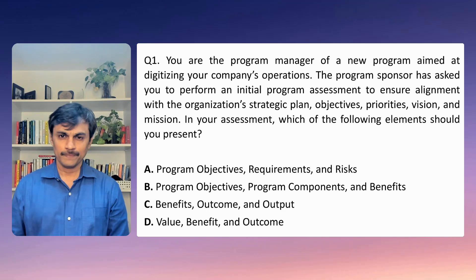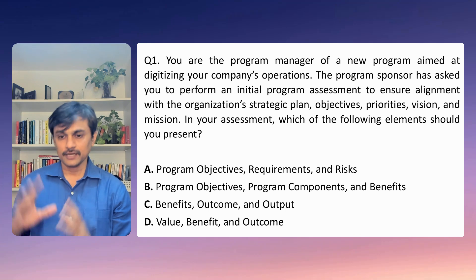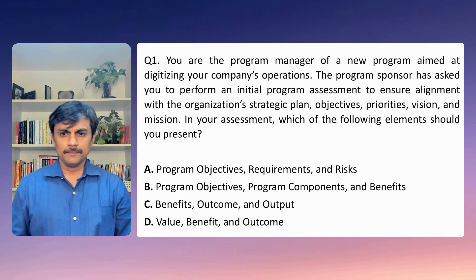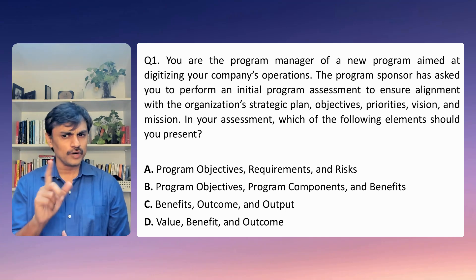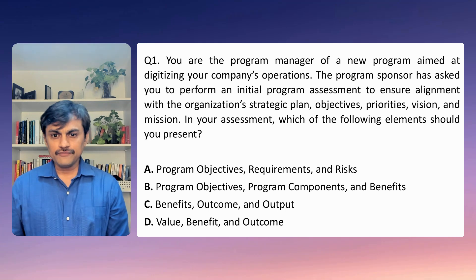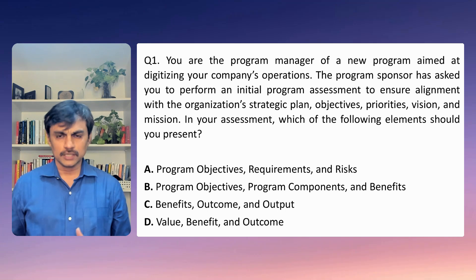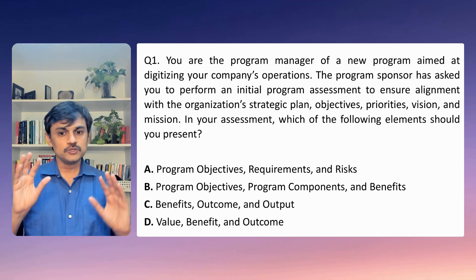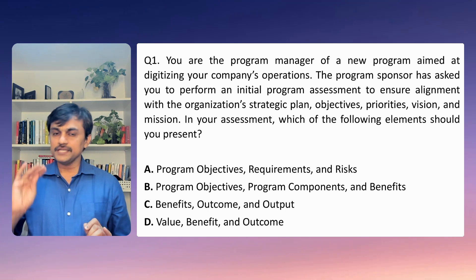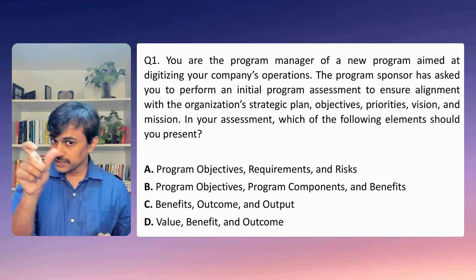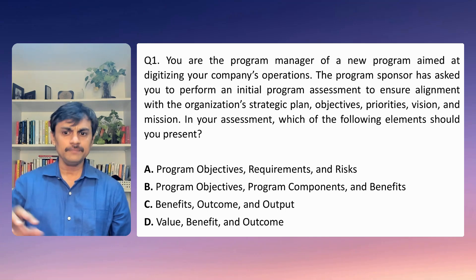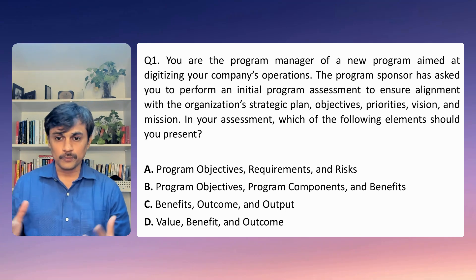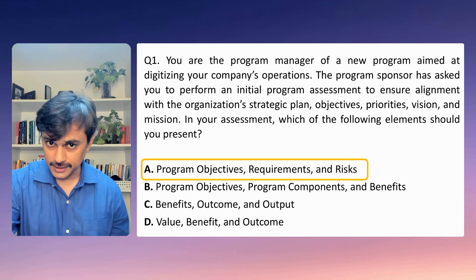Option B includes program objectives — definitely important — but also program components, which at this stage is a bit too much detail. Benefits could apply, but program components are not right. Option C is benefits, outcomes, and outputs — output is further detail of a program component, so it's out. Option D has value, benefits, and outcomes — outcomes are also related to outputs, so C and D are easy to rule out. That leaves A and B. Since B includes the risky element of program components, we can eliminate it and go with option A.